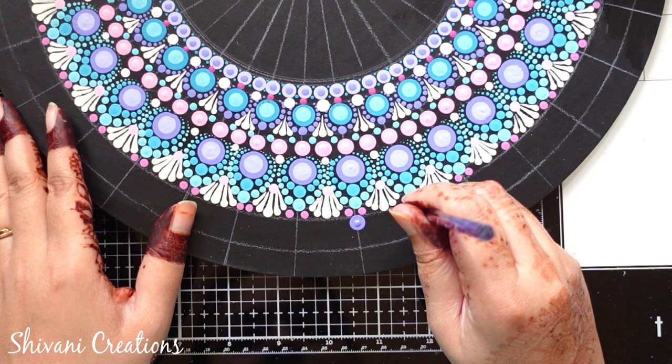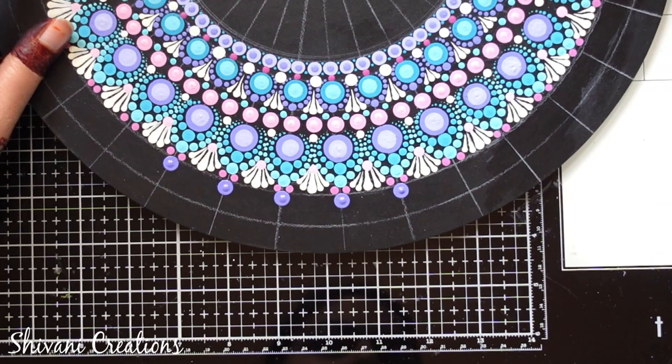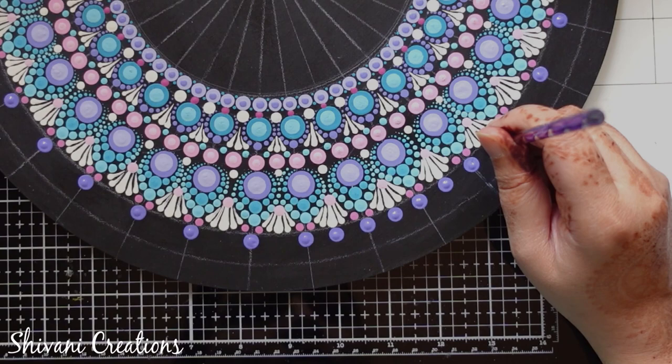Then for the next row, I am taking dark lavender color. Between these dots, I am putting one more dot.